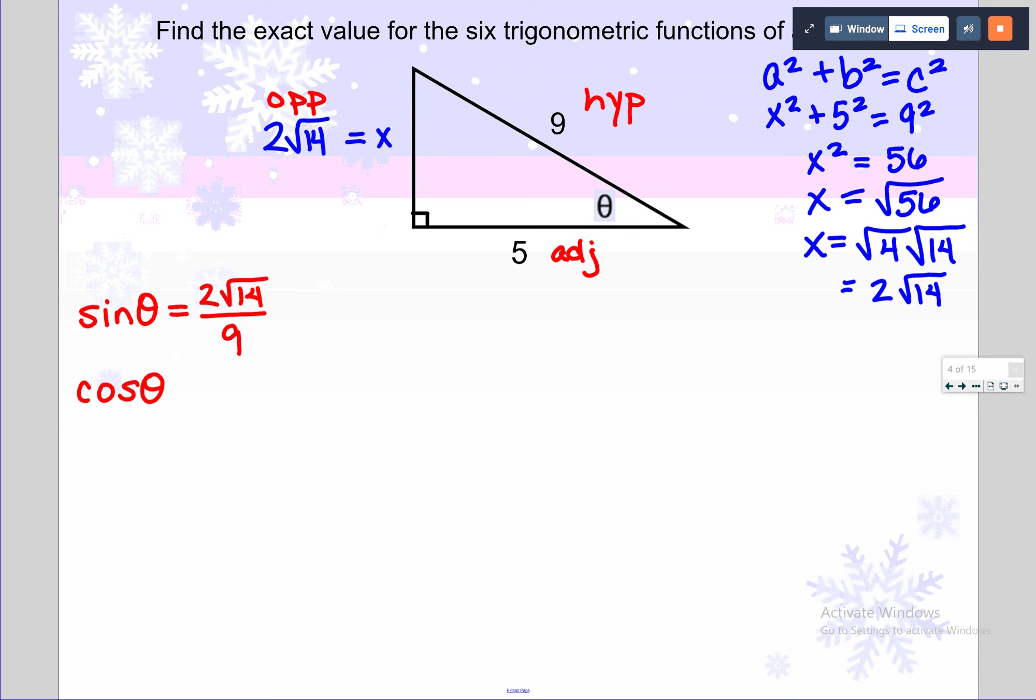Cosine is adjacent over hypotenuse, 5 over 9. Tangent, opposite over adjacent, 2√14 over 5. Now once you have those three, we're just going to flip all of them. The reciprocal of sine is cosecant, flip it, 9 over 2√14. The reciprocal of cosine is secant, 9 over 5. And the reciprocal of tangent is cotangent, 5 over 2√14.